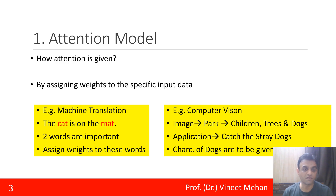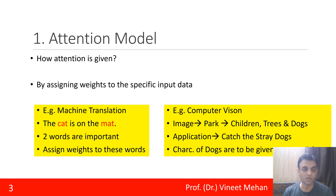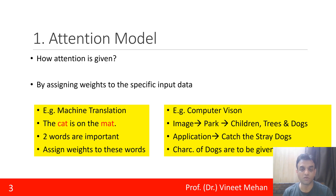Attention can be given by assigning weights to specific input data. For example, in machine translation with the sentence 'the cat is on the mat,' there are two important keywords: cat and mat. These two important words are assigned more weights, and thus more attention is given to these words.